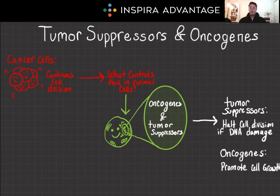Hello, I'm Brutton, one of the MCAT tutors here at Inspira Advantage, where we help students get accepted into medical school and other professional programs. Today, we're going to explore the complex roles of tumor suppressors and oncogenes in cancer biology, a really important subject for the MCAT.